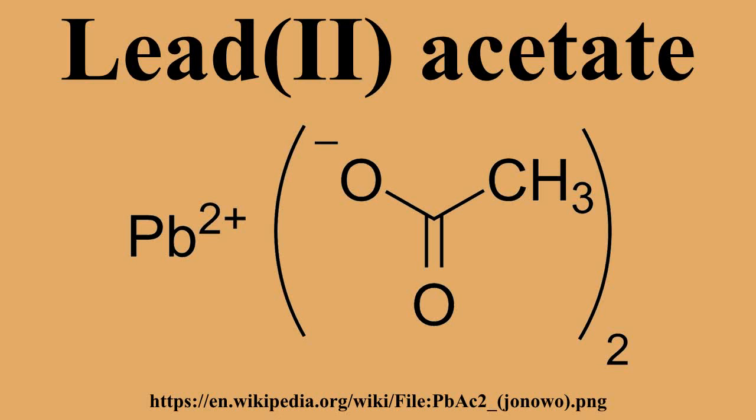Pb + H2O2 + 2H+ → Pb2+ + 2H2O. Lead acetate can also be made via a single displacement reaction between copper acetate and lead metal.